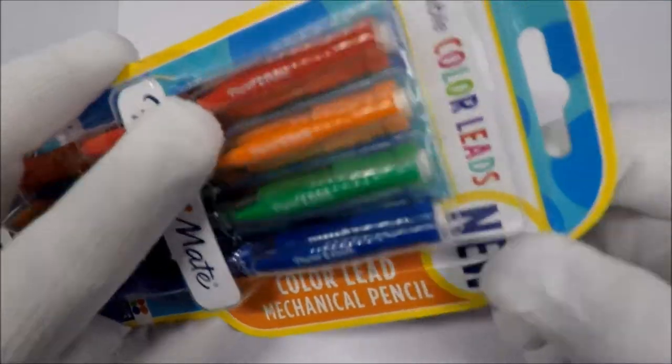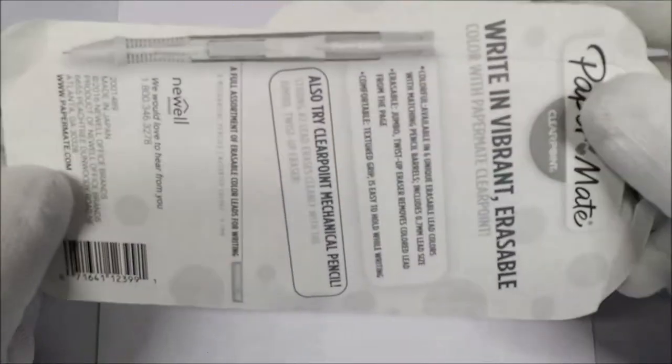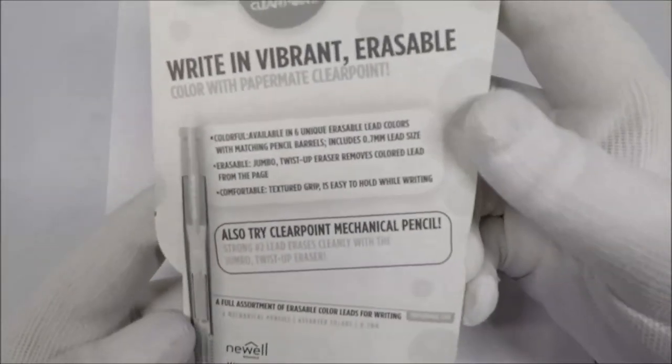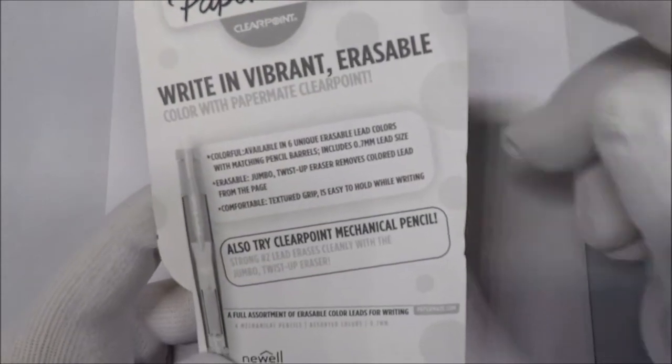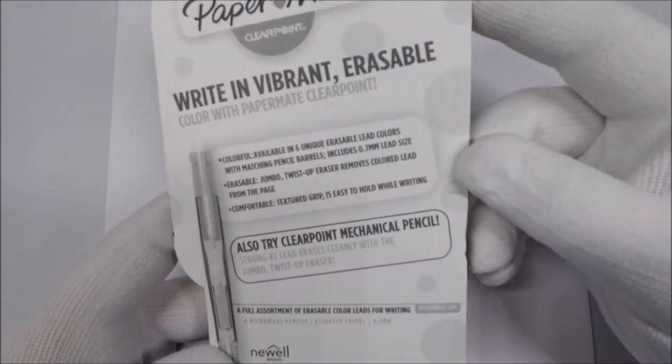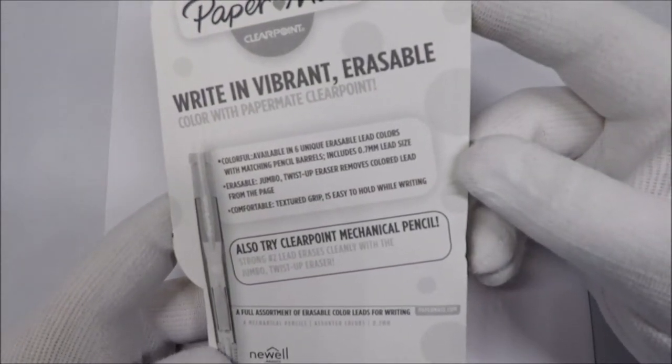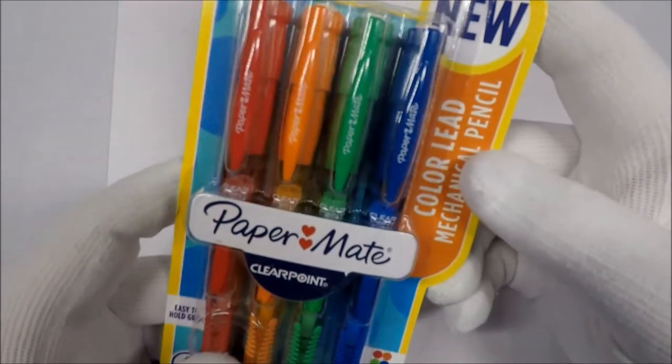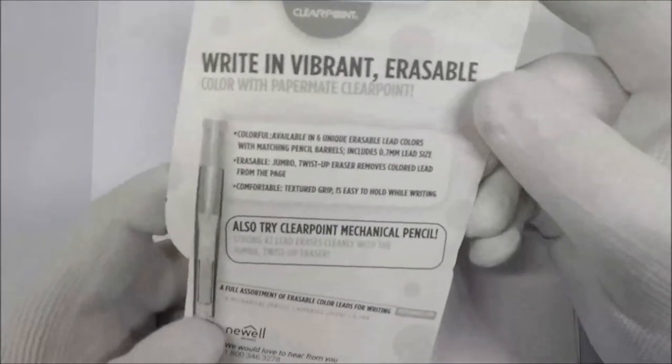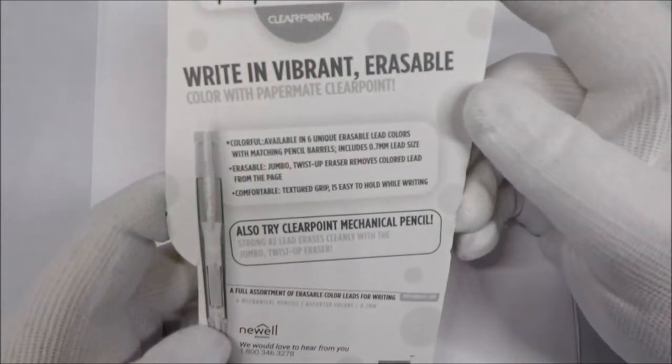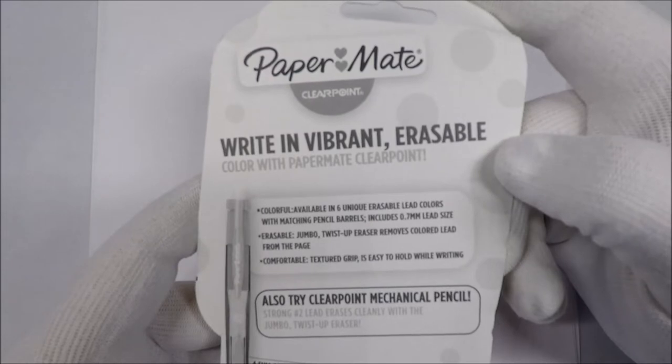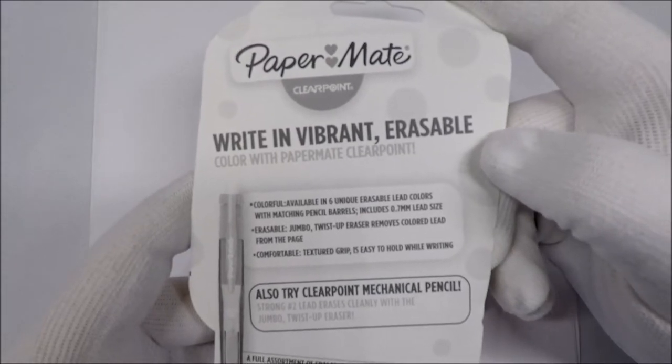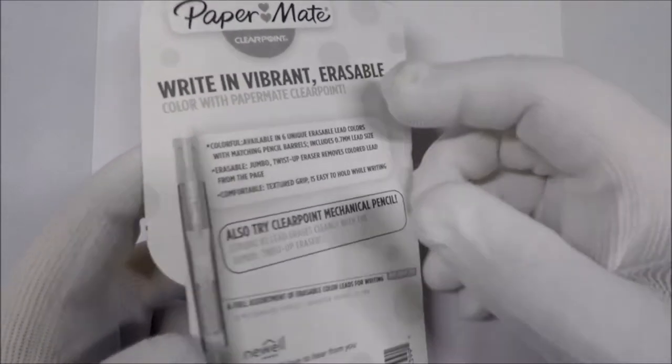Now this pack was super inexpensive, it was like under five dollars for the four pack if I remember correctly so they're not expensive at all. Let's see, they are apparently erasable which we'll definitely test out. A jumbo twist up eraser removes color, we'll have to figure out what the twist up eraser part is for sure.